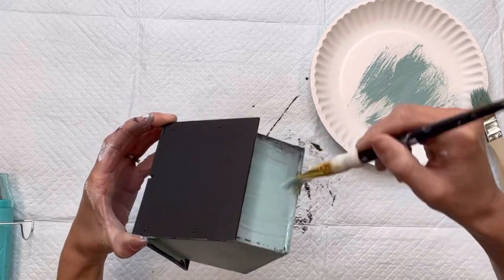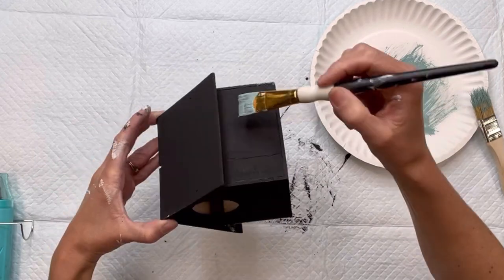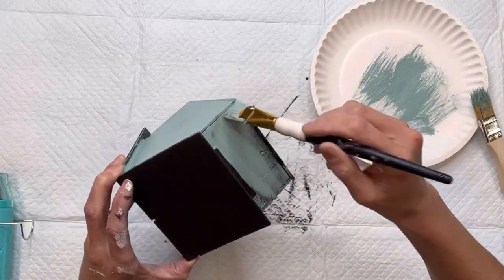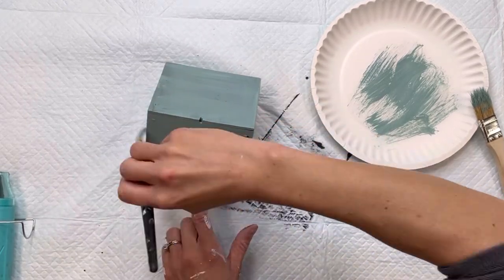I then took my Wise Owl Higgins Lake and I went on top of the black paint. Again the black paint was mostly to just cover the design that was already on the birdhouse.